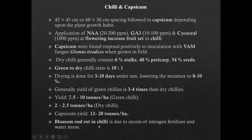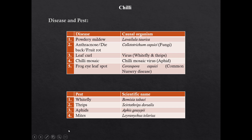Blossom end rot in chili is due to excess nitrogen fertilizer and water stress. Diseases: Powdery mildew is caused by Leveillula taurica. Anthracnose disease of chili is caused by Colletotrichum capsici, which is a fungal disease. Leaf curl of chili is caused by chili leaf curl virus, transferred by whitefly and thrips. Chili mosaic is caused by chili mosaic virus with aphid as vector. Frog-eye leaf spot is a common nursery disease caused by Cercospora capsici.